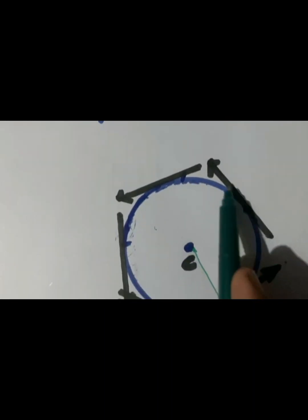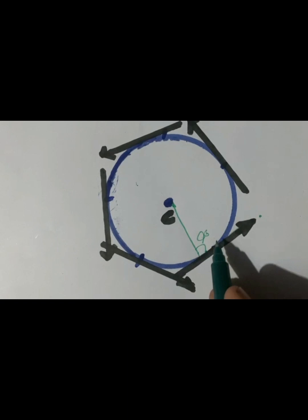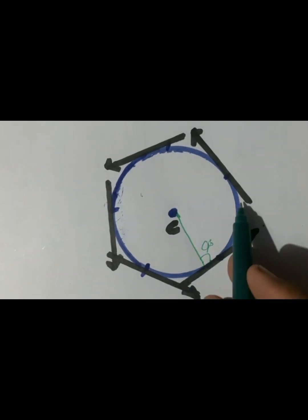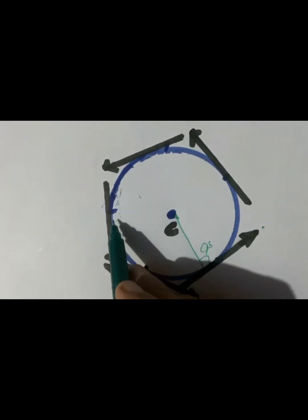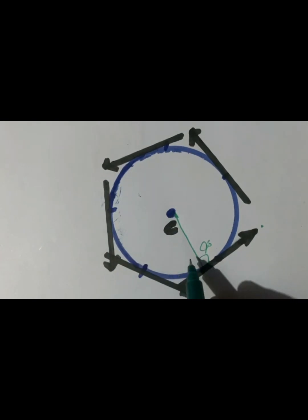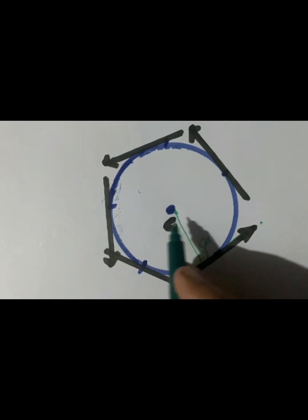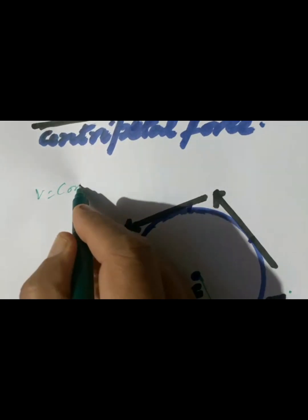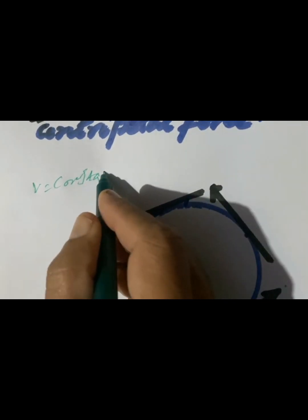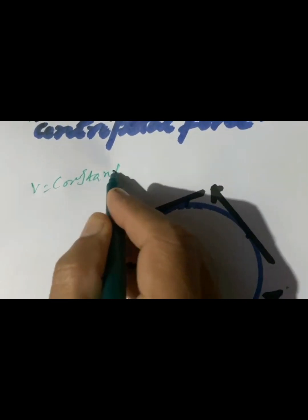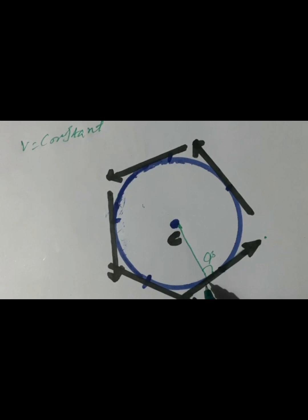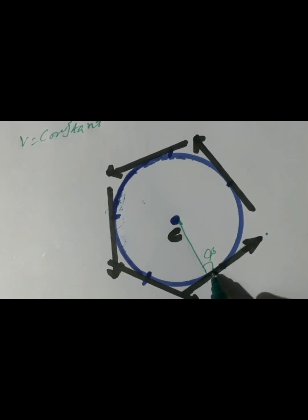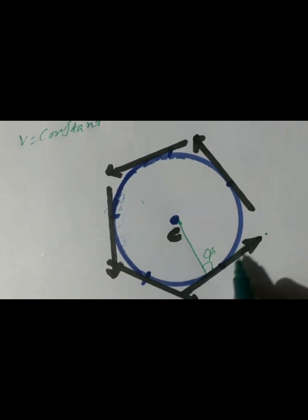Let's suppose the body is moving in a circle with constant speed — V is constant. However, its velocity is variable. At this point, its velocity can be found by drawing a tangent line.